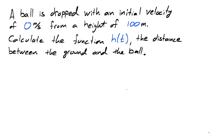Suppose a ball is dropped with an initial velocity of 0 meters per second from a building which is 100 meters tall. Imagine wind resistance is irrelevant. Find the function representing the height of the ball with respect to time.